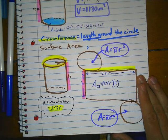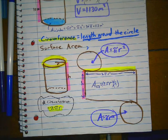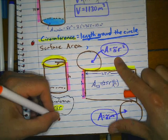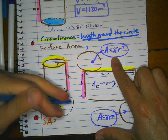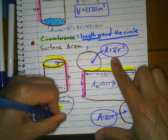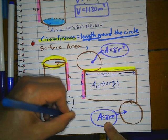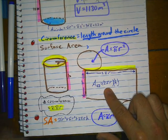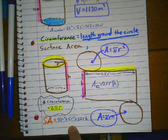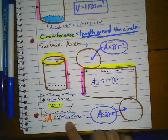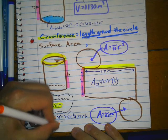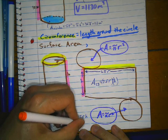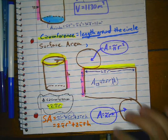So the total surface area equals pi r squared plus pi r squared plus 2 pi r h. The rectangle contributes 2 pi r h, and the two circles contribute 2 pi r squared. So the surface area formula is 2 pi r squared plus 2 pi r h.